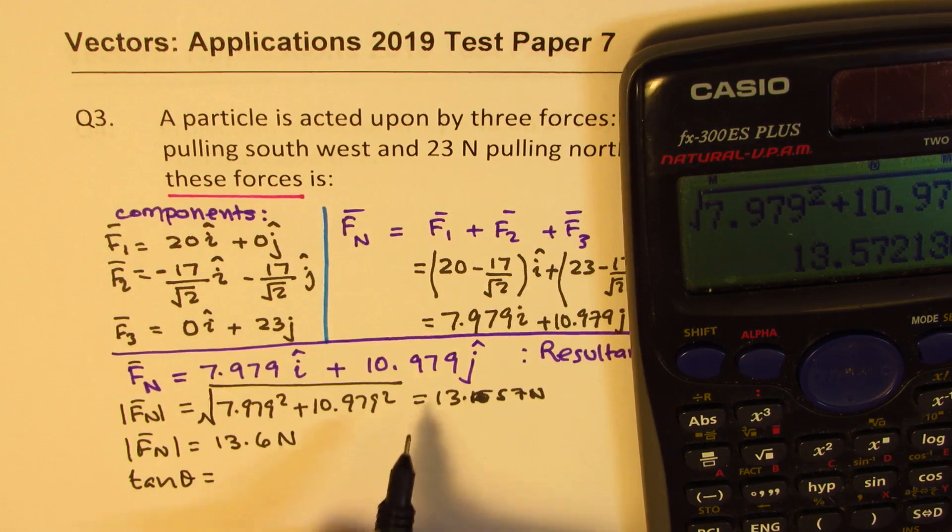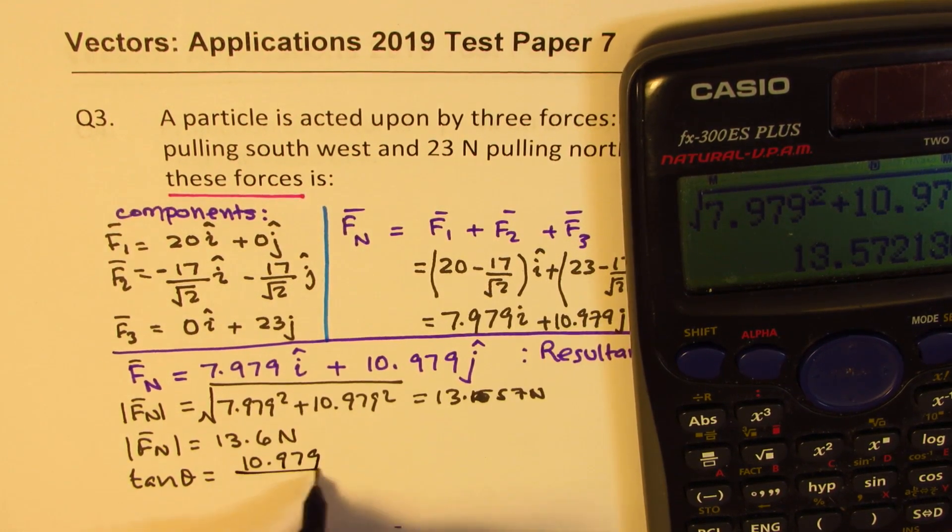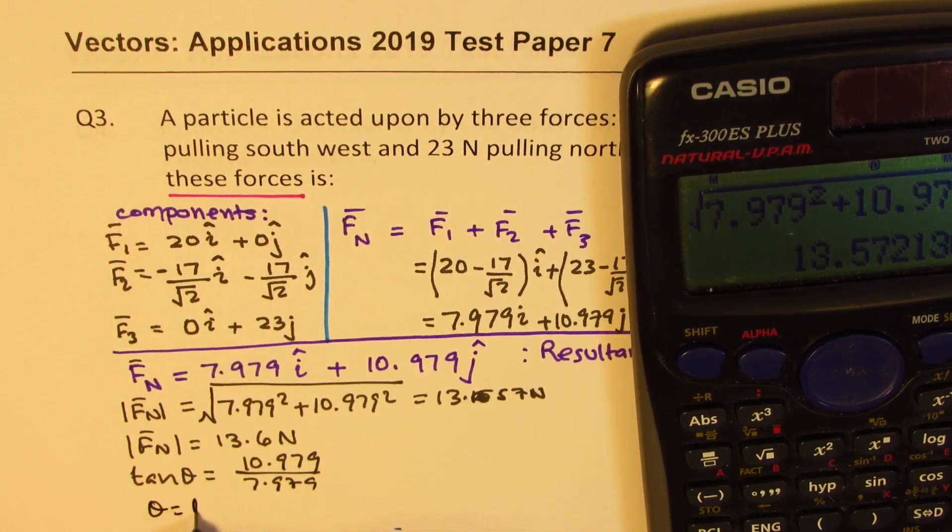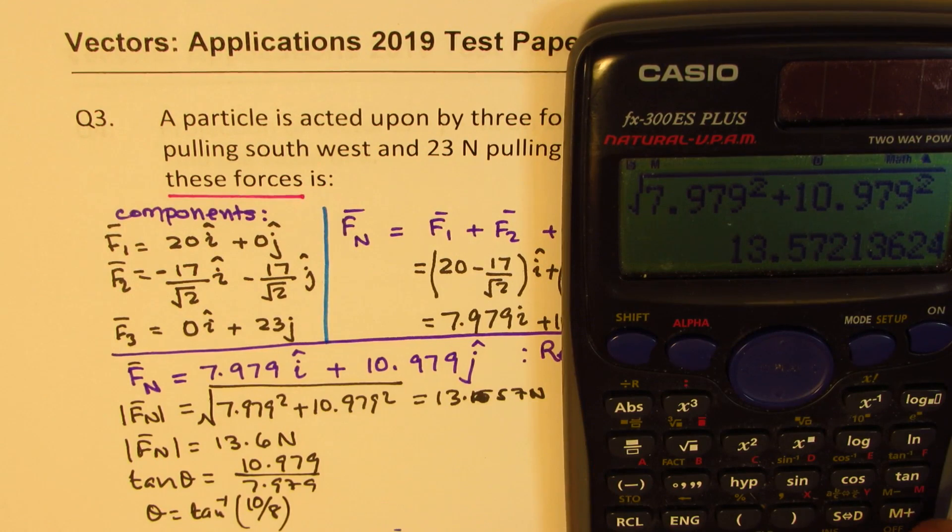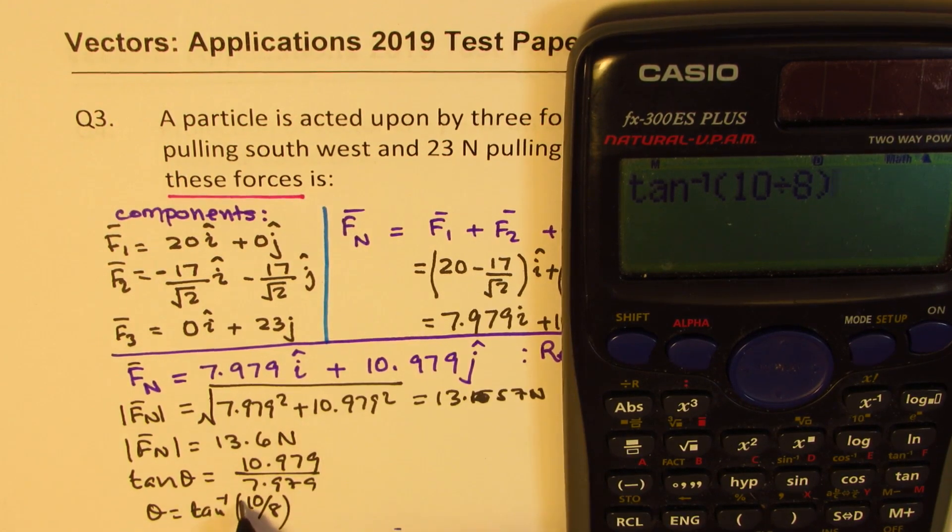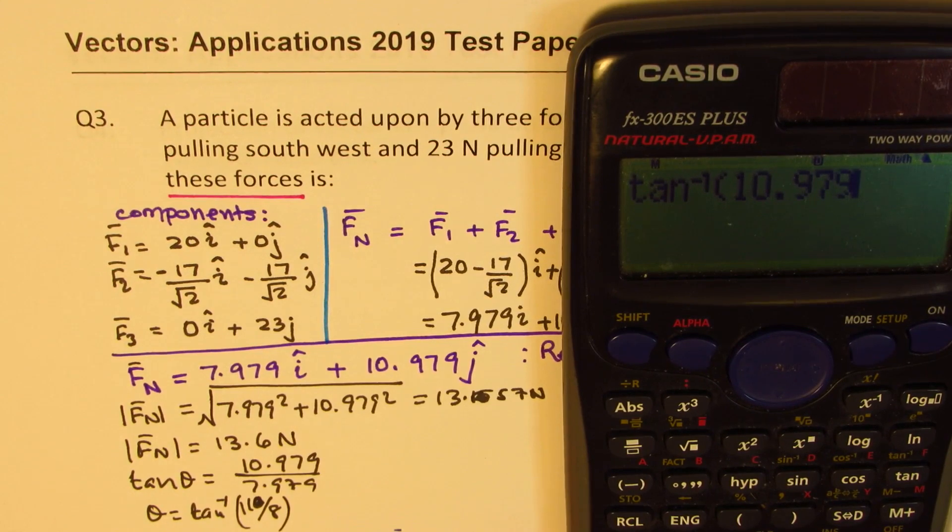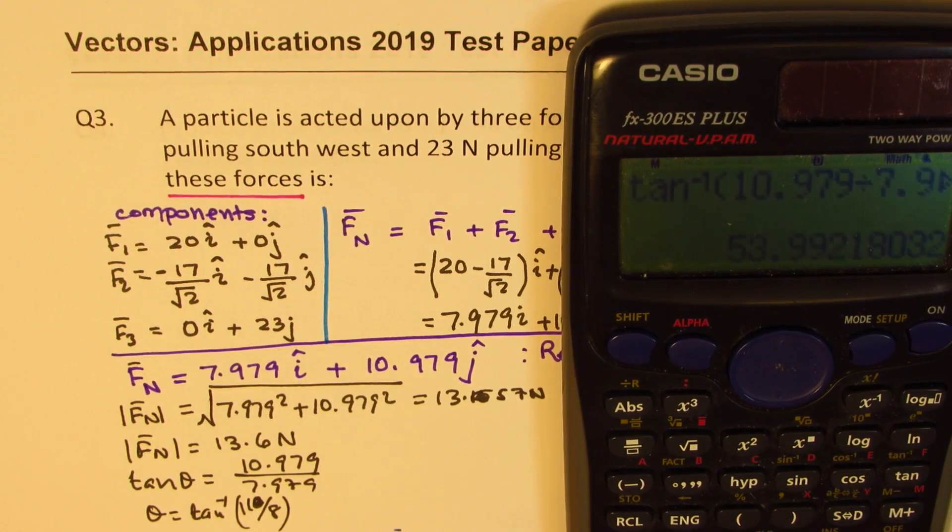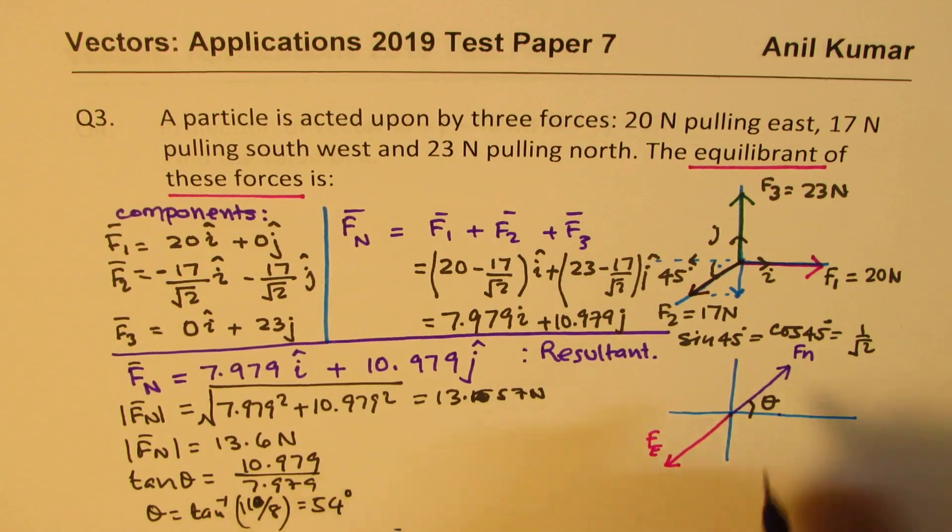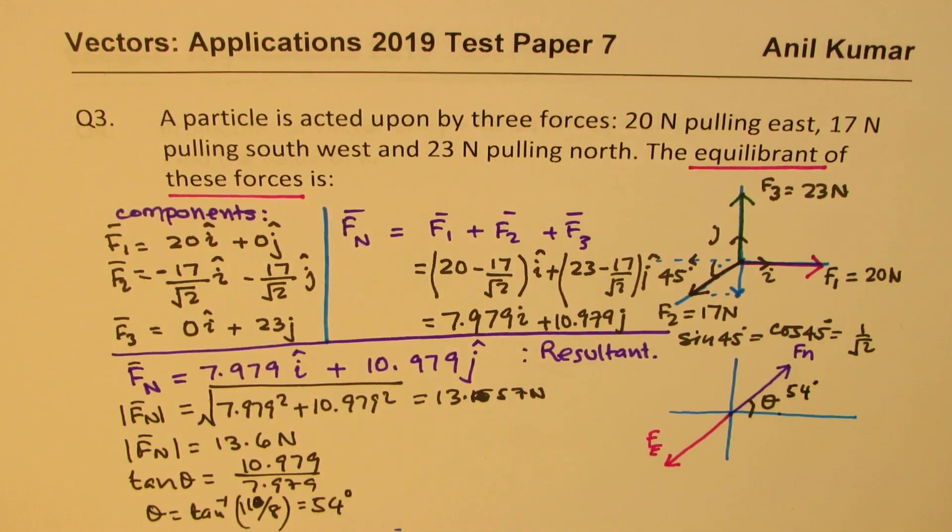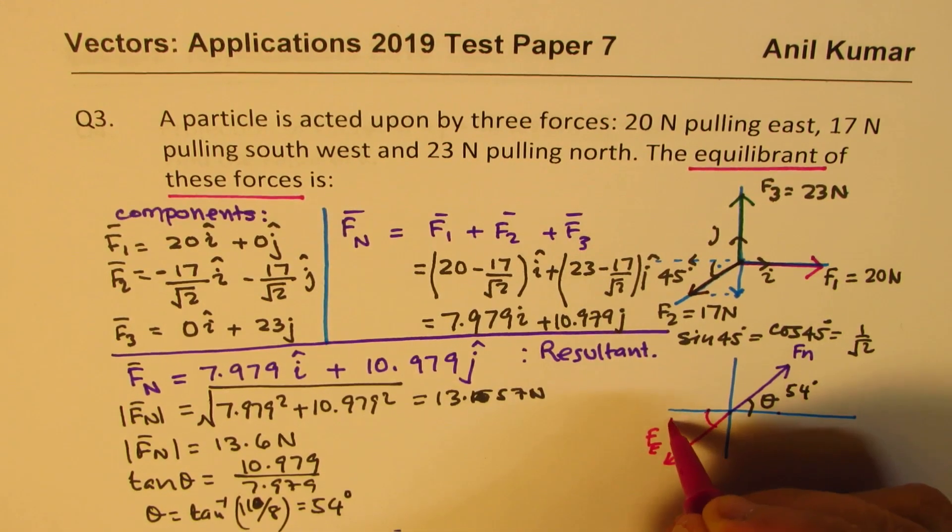Now, let's also find the angle tan theta. So tan theta will be a ratio of 10.979 over 7.979. So angle theta will be tan inverse of 10.979 divided by 7.979, which is equal to 53.99. So that is 54 degrees. So we got this angle theta as 54 degrees. So that really means that this angle here is also 54 degrees.